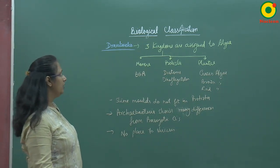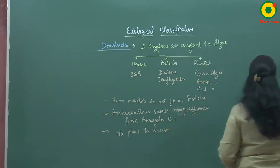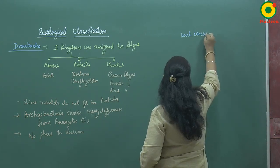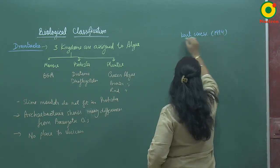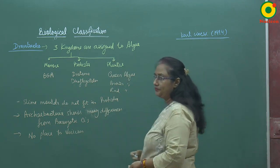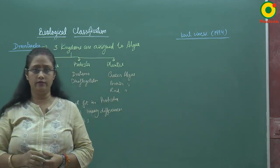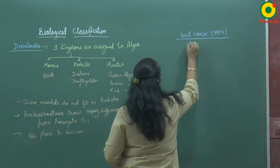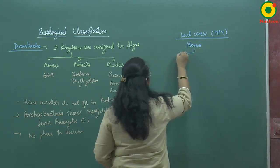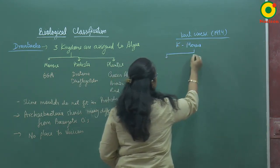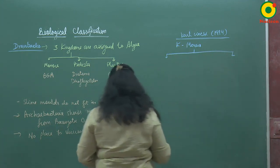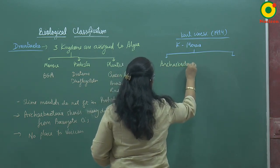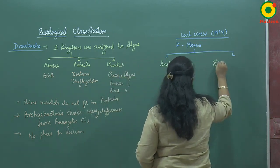Later, another scientist came known as Carl Woese. In 1994, he divided Monera into two kingdoms: Archaebacteria and Eubacteria.